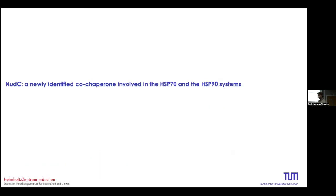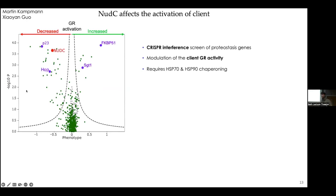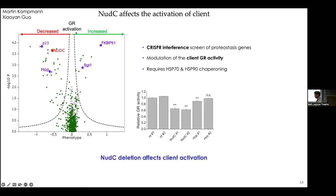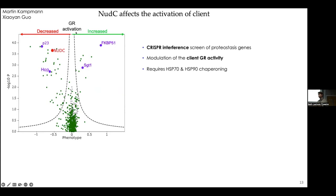Once the assignment was done, we could start looking at co-chaperones. Today I'm going to talk about the protein NUTC. It was identified when our biologist collaborators established a CRISPR assay in which they created individual cell lines where a single gene is knocked out. They knocked out all genes linked to proteostasis and looked at the activation of GR, a client of HSP90 that absolutely requires HSP90 for activity, as a readout of HSP90 pathway function. Among the strongest effects were non-HSP90 chaperones, but they also found NUTC, which was not very well studied or characterized.